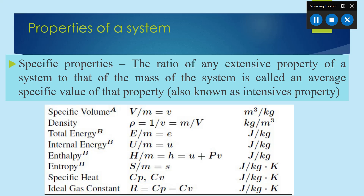Next, there is a term known as specific properties. A specific property is the ratio of any extensive property of a system to the mass of that system, and that is called the specific value of that property — it is also known as an intensive property. For example, specific volume is the total volume divided by mass, represented by the small letter v, and its unit is meter cube per kilogram.